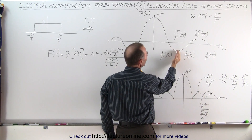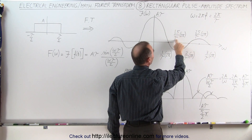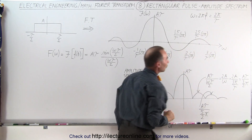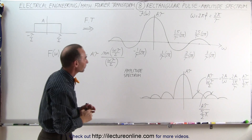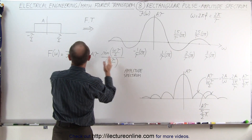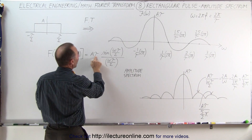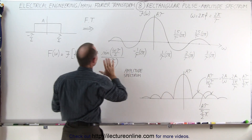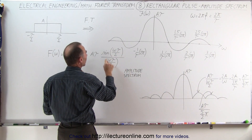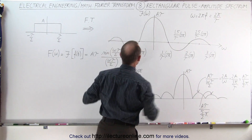The points in between where we have an amplitude are at 1 and a half times 2 pi over the period, 2 and a half times 2 pi over the period, 3 and a half, and so forth. The amplitude of that function can be described by the product A times tau — that amplitude — times the sine of omega tau over 2 divided by omega tau over 2. That's the function that describes what you see here.